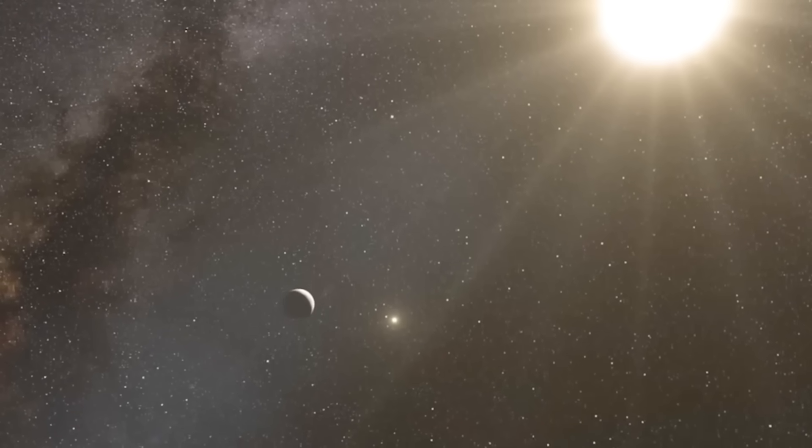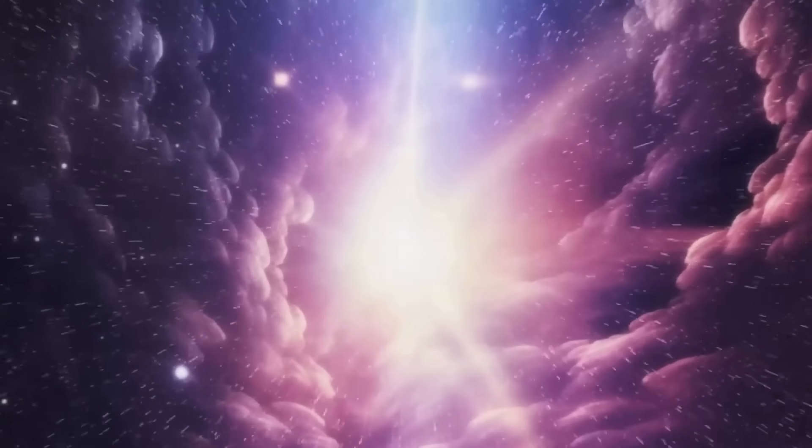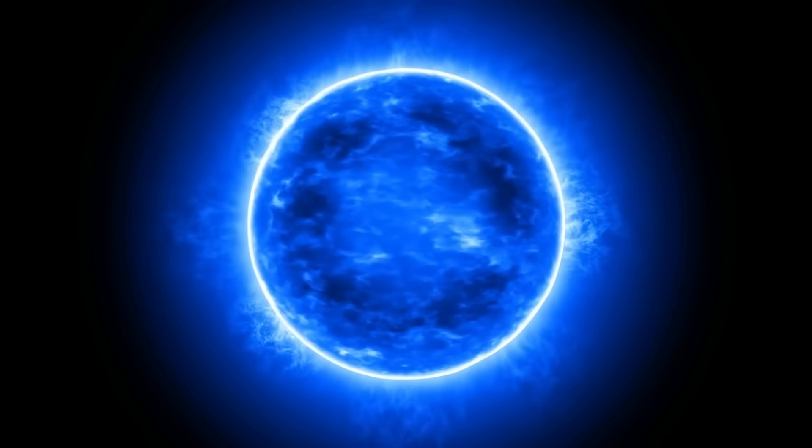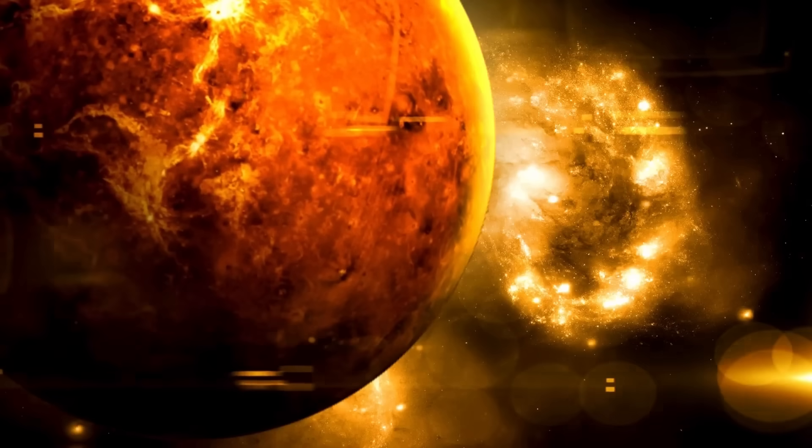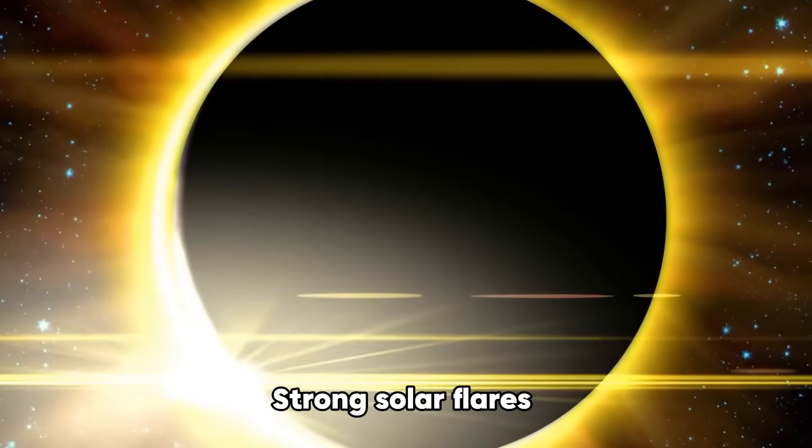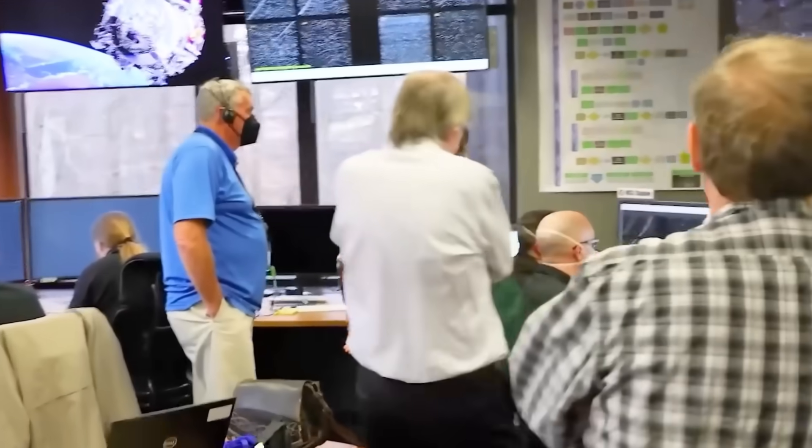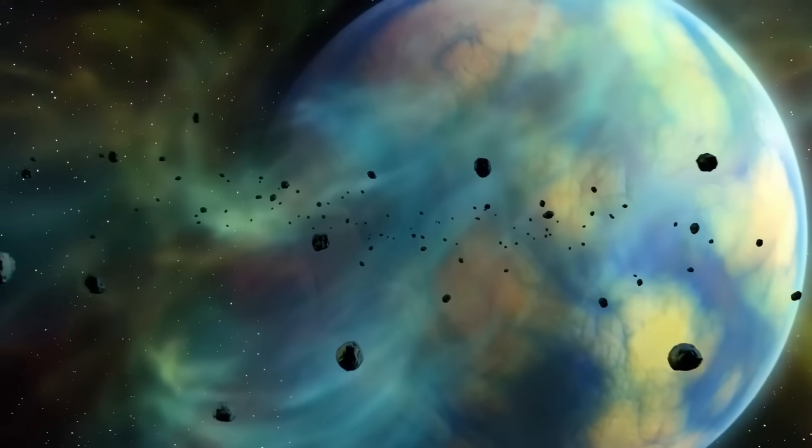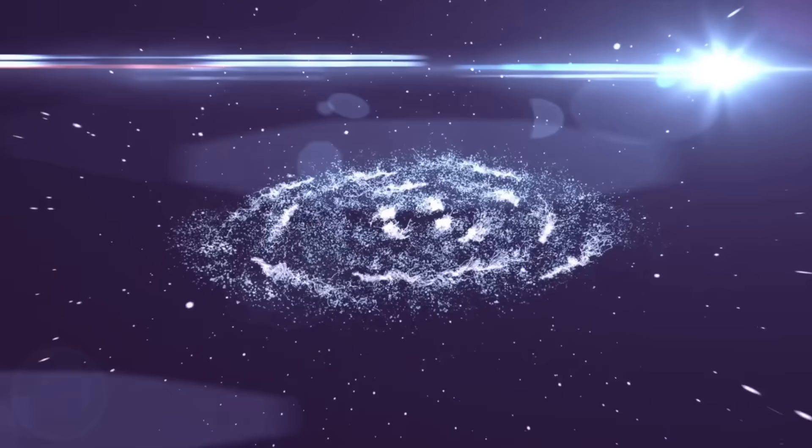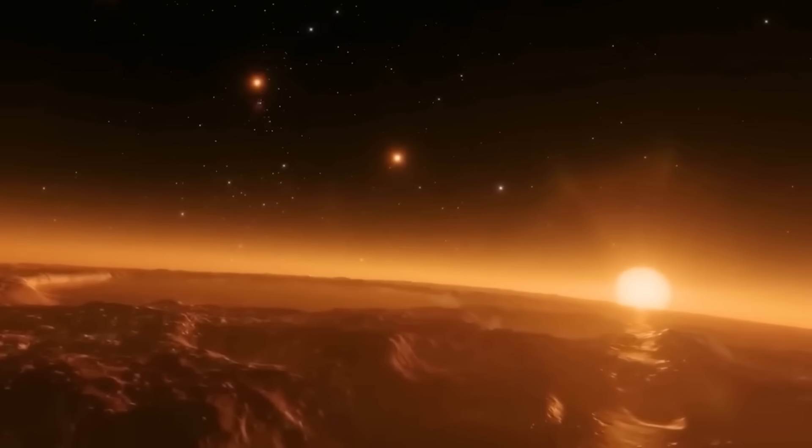Planets like Proxima b that orbit within its habitable zone face a tremendous challenge from the extraordinarily intense magnetic fields that create high-energy radiation and particle bursts. Strong solar flares might wipe out any life on Proxima b, according to new research that used high-resolution magnetic field images. The planet gets around a thousand times more solar wind radiation than Earth.